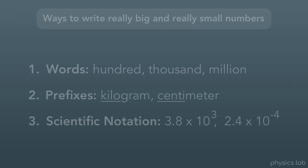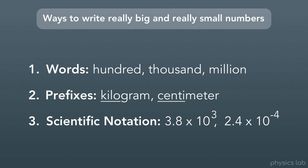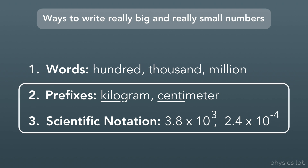So what do we do? There are several ways that we can write really big or really small numbers. First, we could use words, like hundred, thousand, or million — instead of writing 8 with 6 zeros after it, we could just write 8 million. Second, we could use prefixes — little words that you stick onto the front of a unit to write big or small numbers. Third, we can use scientific notation, which is when you multiply a number by 10 to some power or exponent to make it really big or really small. Prefixes and scientific notation are what we'll really use in physics.